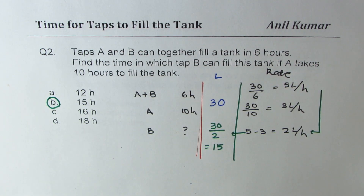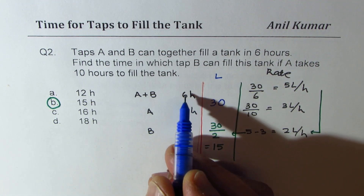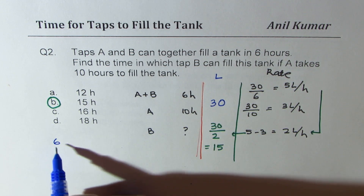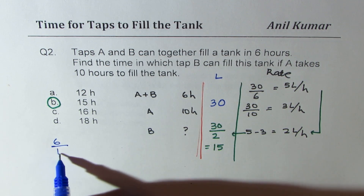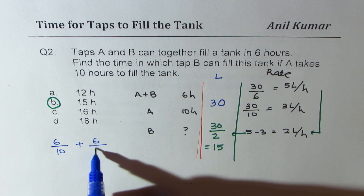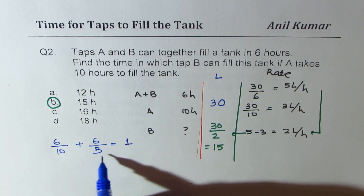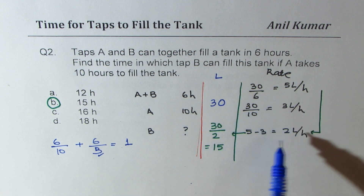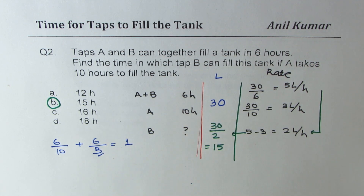You can see how simple it becomes — no equations needed. An alternate method is to write: 6 × (rate of A) + 6 × (rate of B) = 1, but the shortcut method is much neater and helps you find quick solutions to multiple choice questions.